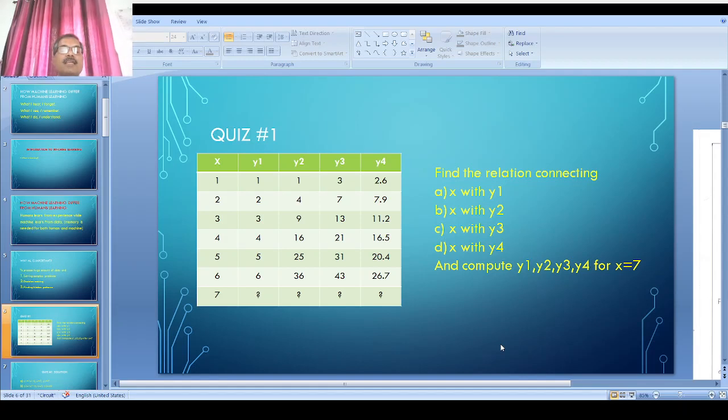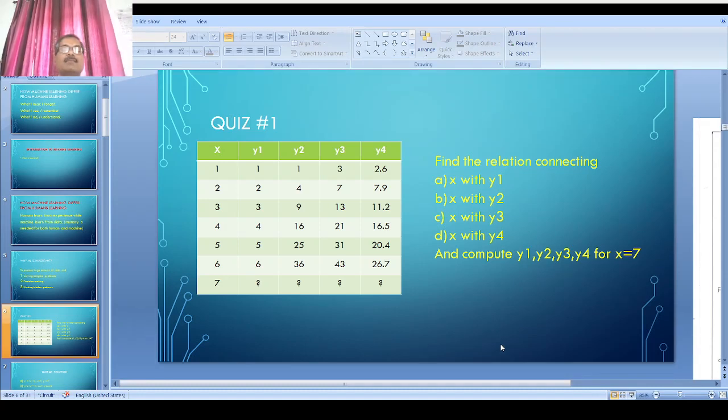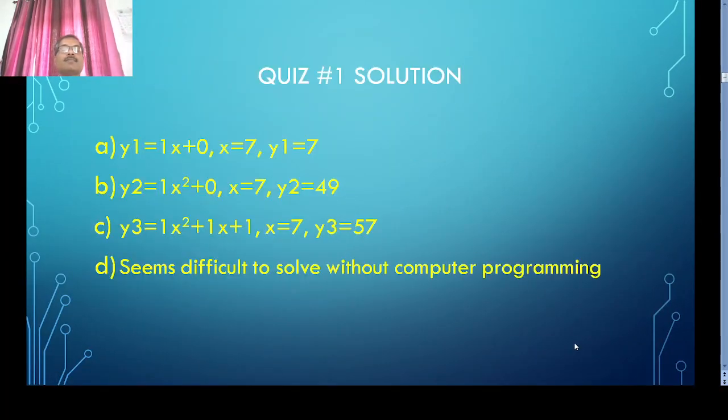Similarly, for the relation connecting x and y2, your mind might have processed various iterations and found the answer. I hope you got the answer: y2 equals x squared plus 0.